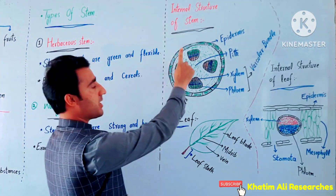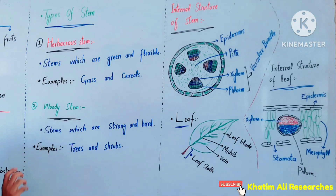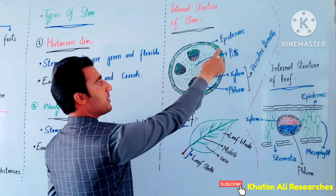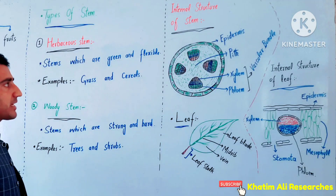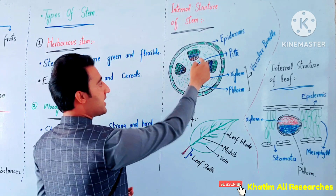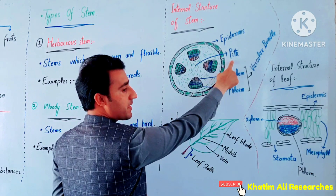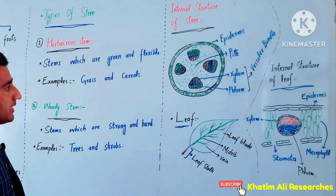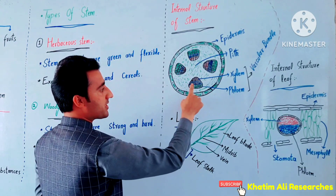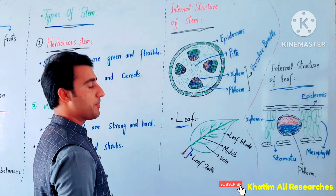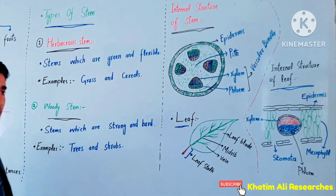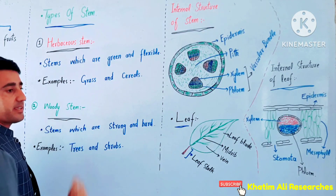Now the internal structure of the stem. The outermost boundary is the epidermis — like skin, the epidermis is the outermost layer. Inside we have the cortex for storage. Further inside is the vascular bundle.